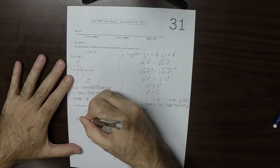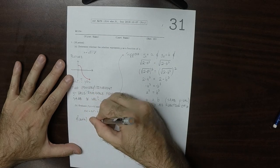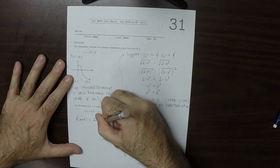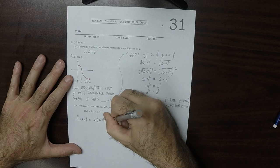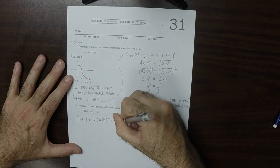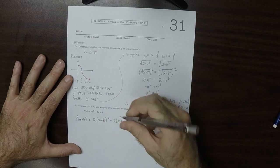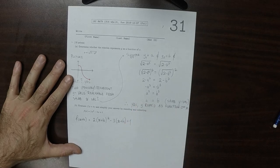So f of x plus h, well that's 2 and then x plus h squared minus 3 times x plus h plus 1.